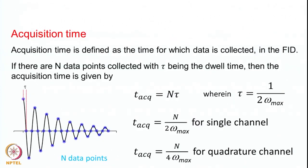The next parameter is the acquisition time — how much data you collect. Acquisition time is defined as the time for which data is collected in the FID. The FID starts here and you collect the data all the way until the signal decays. Beyond that, there will be mostly noise. You do not want to collect noise — you are limited by the relaxation of the signals. By about three times the transverse relaxation time, the signal would have decayed almost to zero. If you collect any data beyond that you are basically collecting noise. The total time from start to end is called the acquisition time.